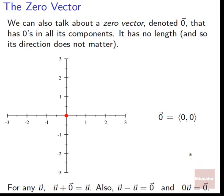We can also talk about a zero vector, denoted with an arrow on top of zero, which has zero in all its components. It has no length — it just lives at the origin, so its direction doesn't matter. For any vector U, adding U and the zero vector gives U. U minus U gives the zero vector. And zero times U gives the zero vector.